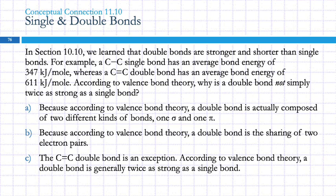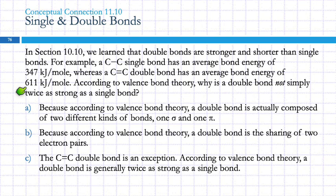Back in Chapter 10, we learned that double bonds are stronger than single bonds, and they're also shorter. Looking at carbon-carbon bonds specifically: the single bond is 347 kJ/mol and the double bond is 611 kJ/mol. Thinking simplistically, if this is a double bond, shouldn't the energy be twice as large? 2 times 347 is closer to 700 than 611, so this isn't quite twice. Why isn't it twice as much, thinking about what we've just learned about valence bond theory?